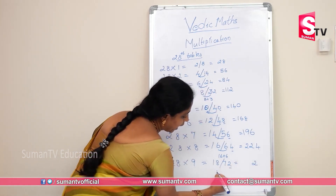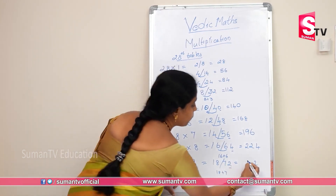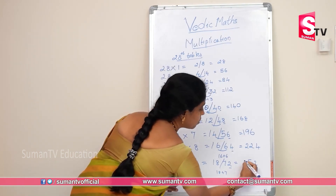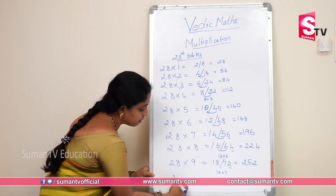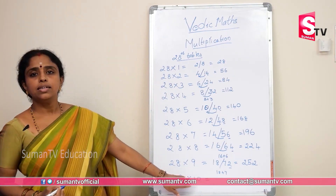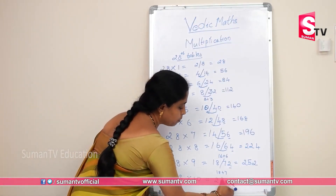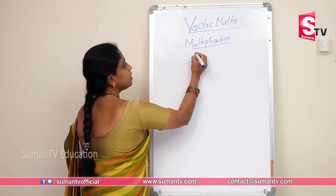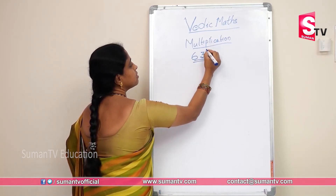28 × 9: nine eights are 72, nine twos are 18. Keep 2 in unit place. 18 plus 7 gives 25. So 28 × 9 is 252. 28 × 10 is 280. That completes the 28 table. Now we will look at the 63 times table.